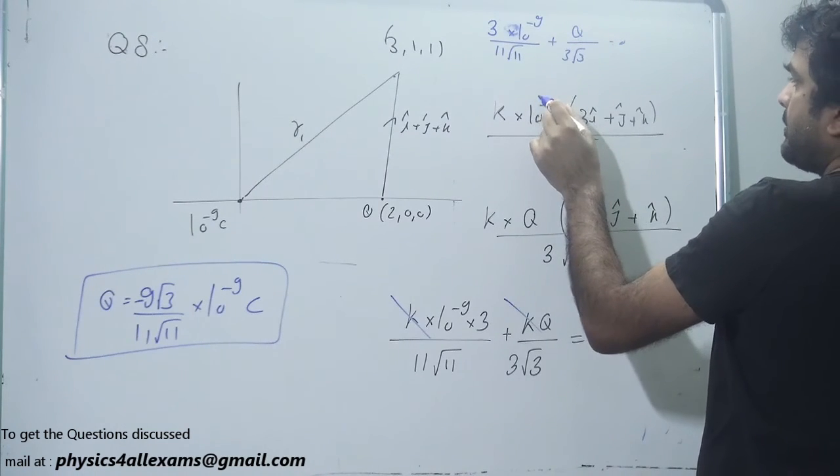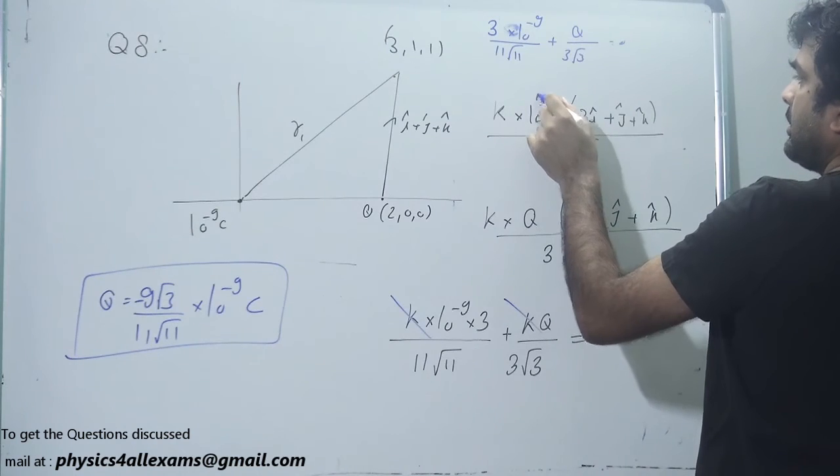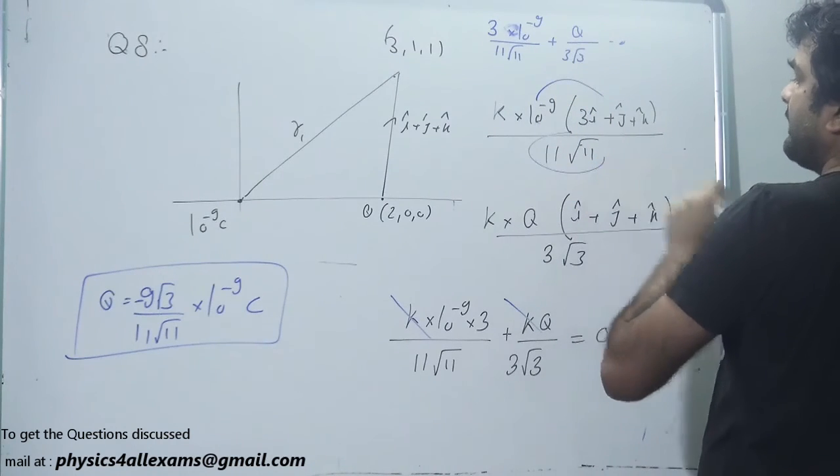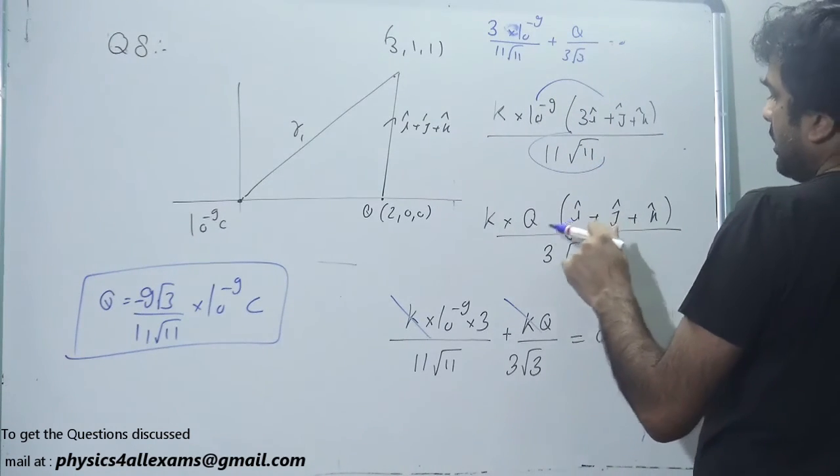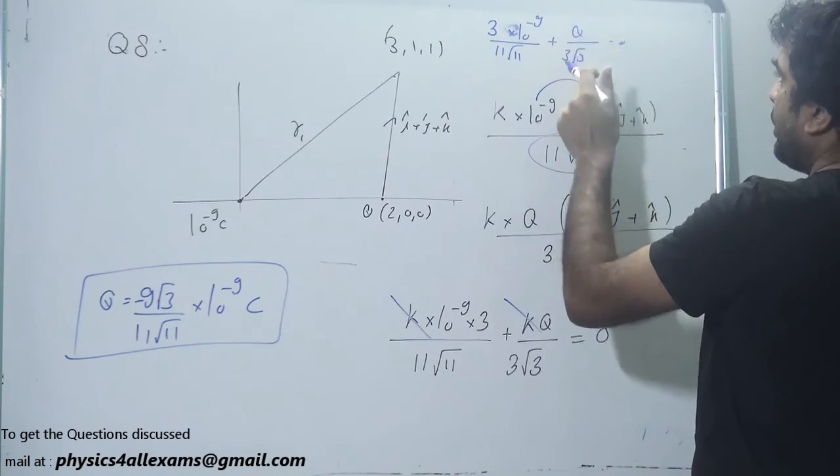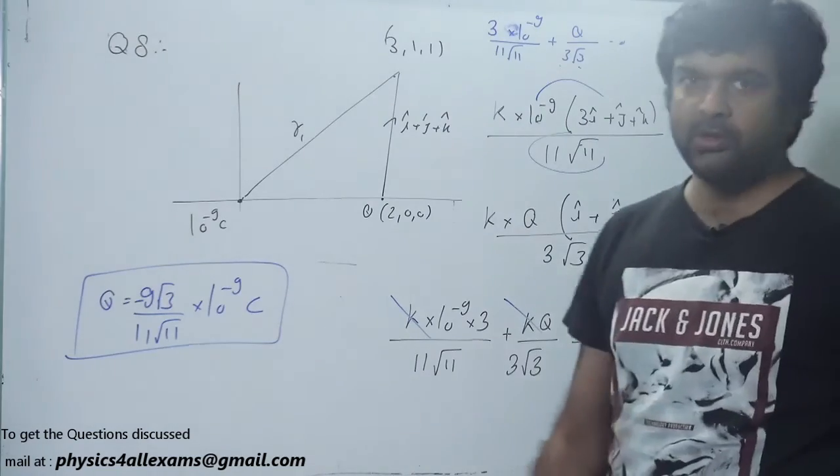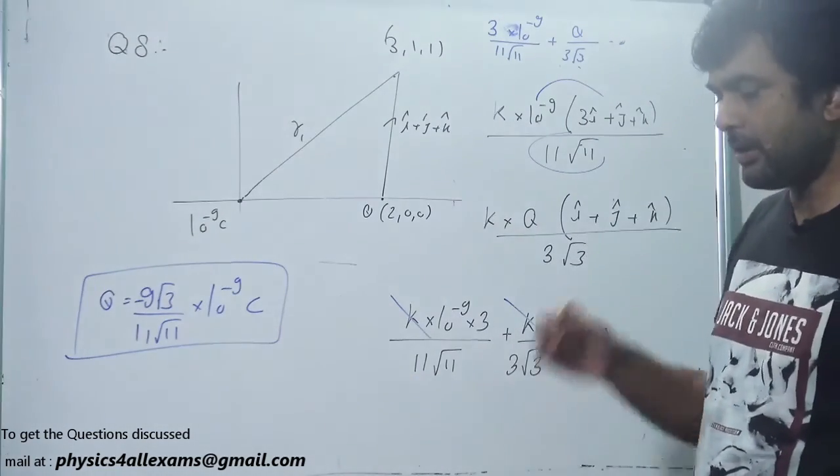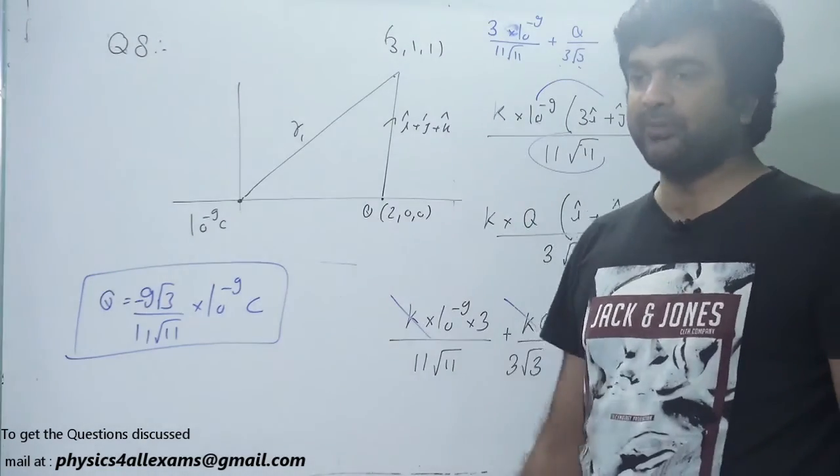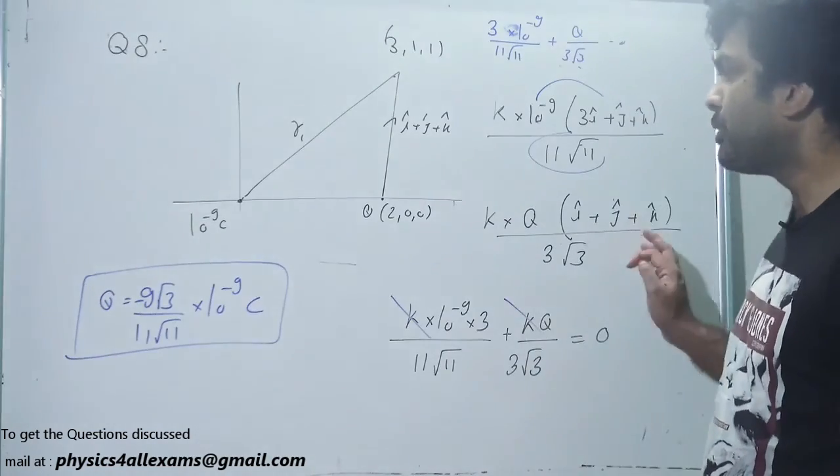then 10 to power minus 9 upon 11 root 11 plus Q upon 3 root 3 won't be 0. So y-component won't be 0. Only the x-component will be 0. From keeping the x-component 0 we have found the magnitude of Q.